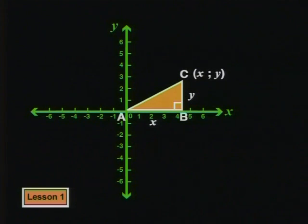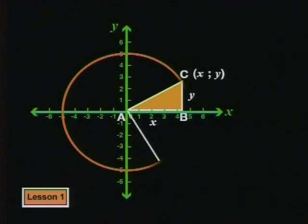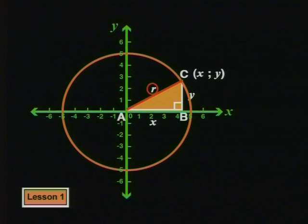What label can we use for the hypotenuse? Well, this hypotenuse can also be seen as the radius of a circle with its center at the origin. So, we'll use an r for radius to represent the hypotenuse.